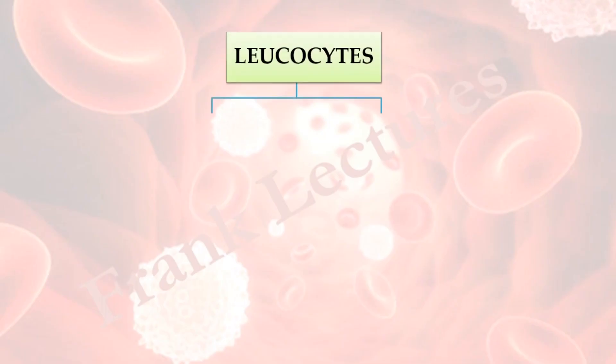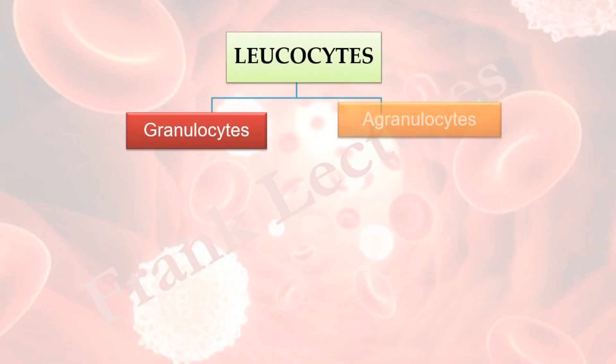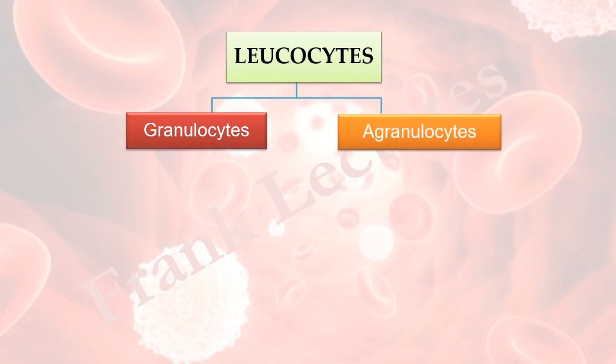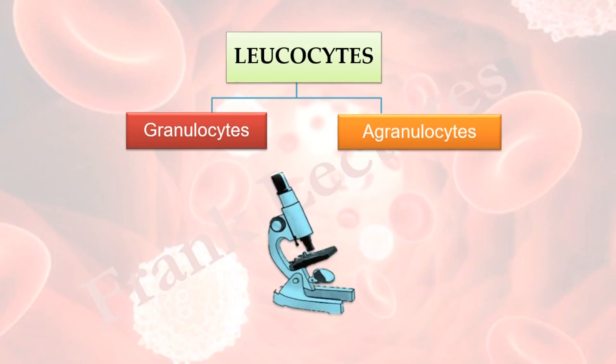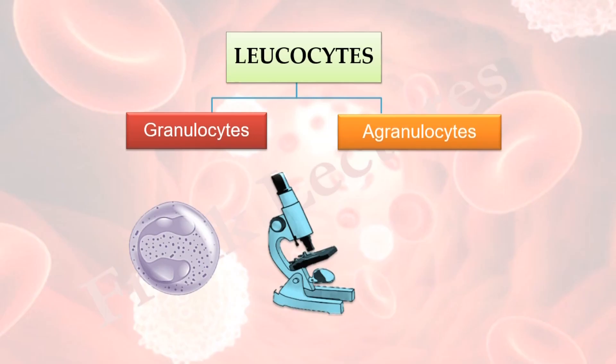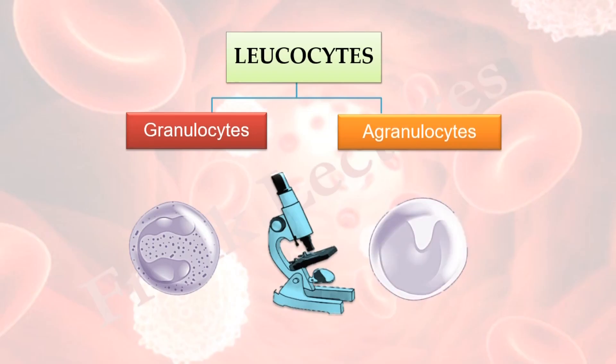Leukocytes have been further classified into two groups: granulocytes and agranulocytes. The basis of this classification is their appearance under light microscope. In case of granulocytes, the granules present in their cytoplasmic matrix are clearly visible under light microscope. But in case of agranulocytes, the cytoplasm appears uniform since the granules are invisible.